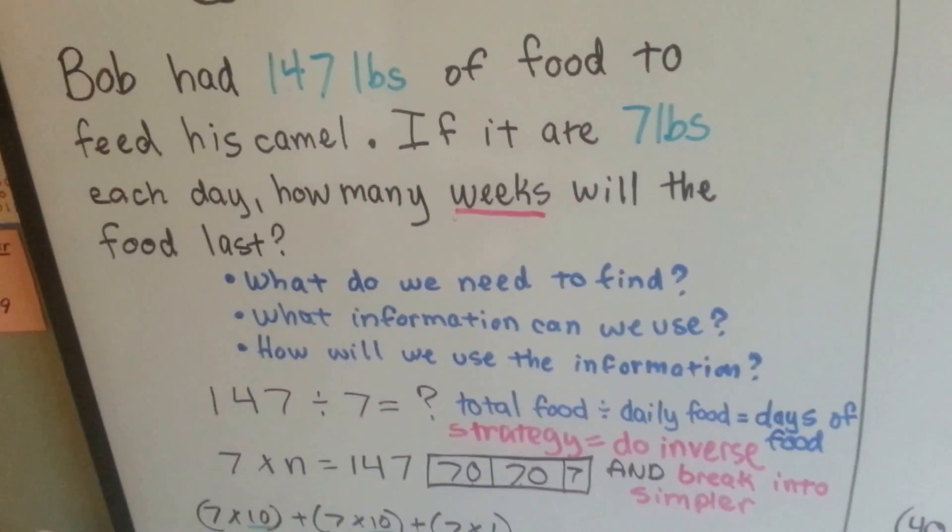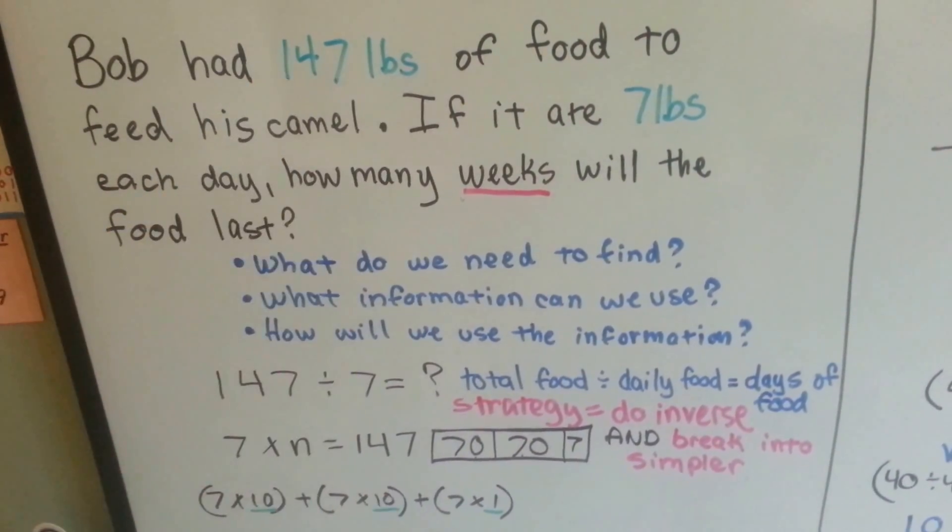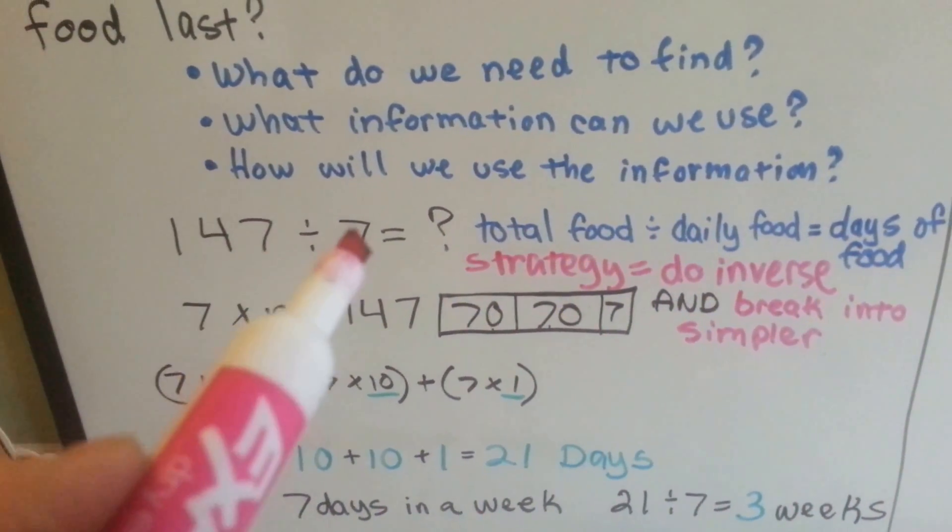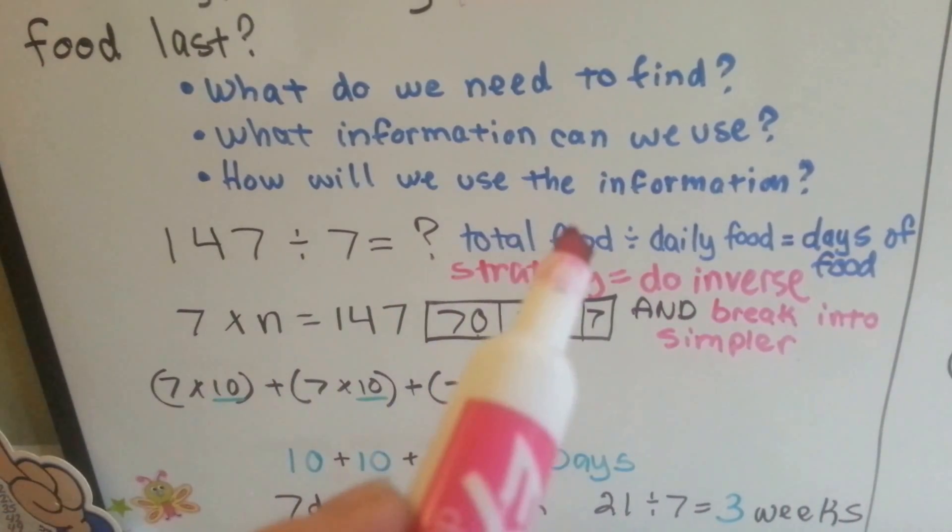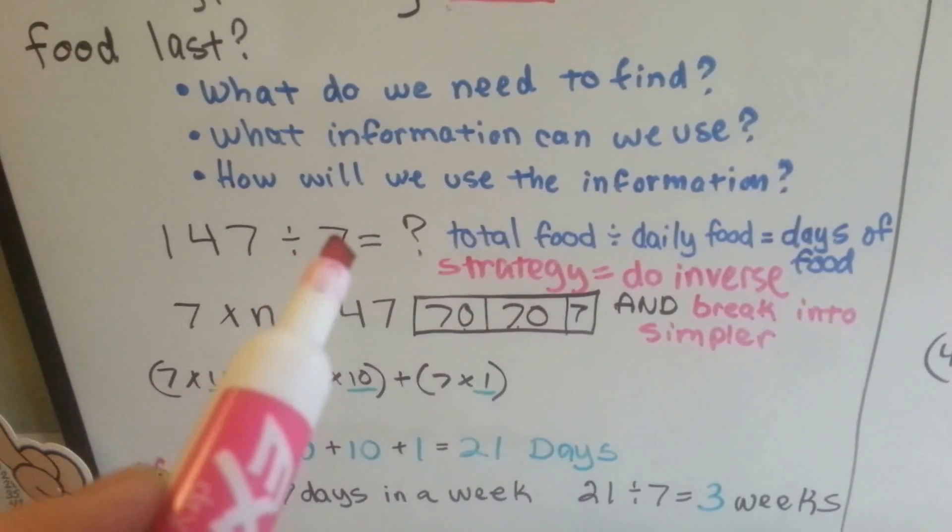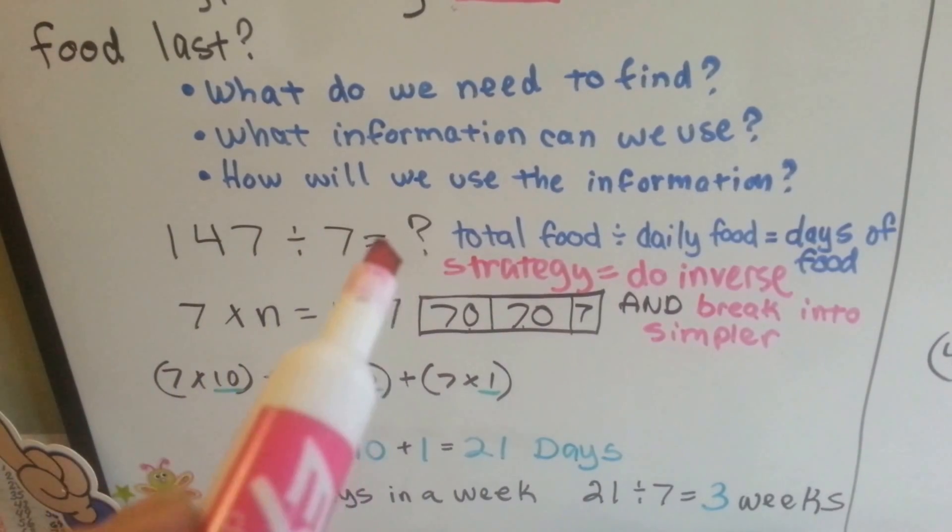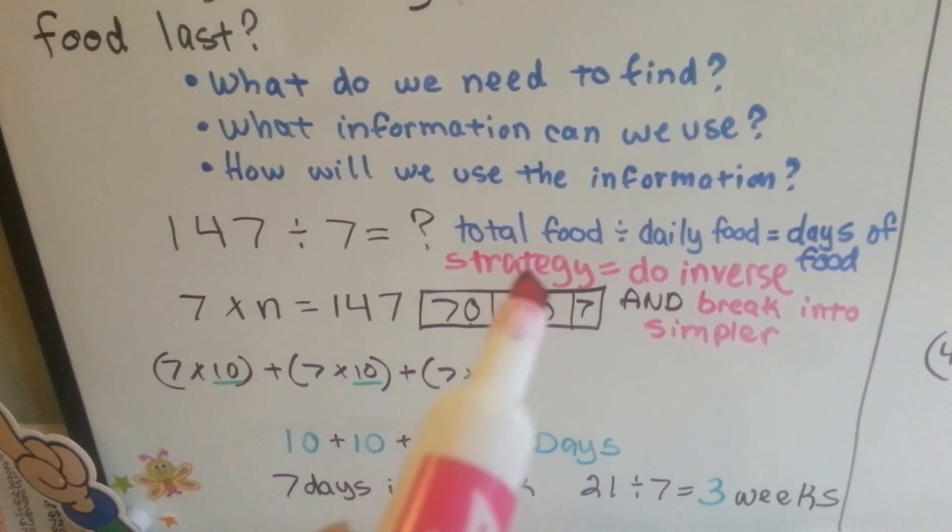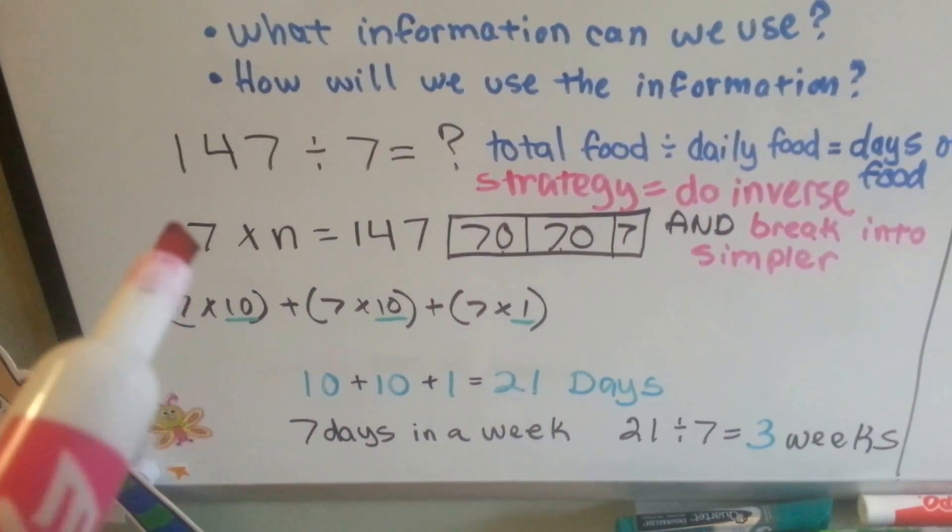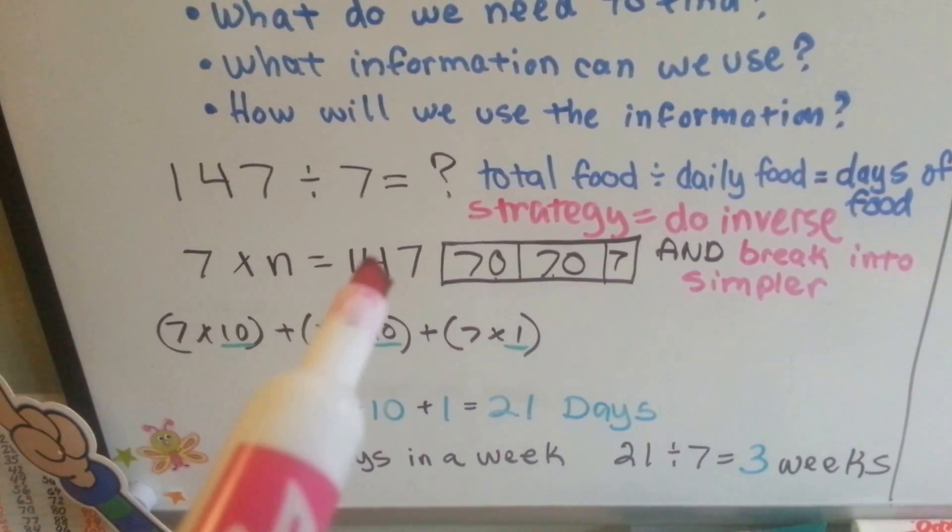How are we going to use this information? Well, we're going to have to figure out how many times the 7 pounds can fit into that 147, or we need to divide, right? So 147 divided by 7 equals what? We need to do the total food divided by the daily food to get the days of food. If we put the 7 pounds that it eats each day into how much he's got, we'll know how many days it will last. Our strategy that I chose was to do the inverse and then break it into simpler problems. We've got, instead of division, multiplication. 7 times n equals 147.